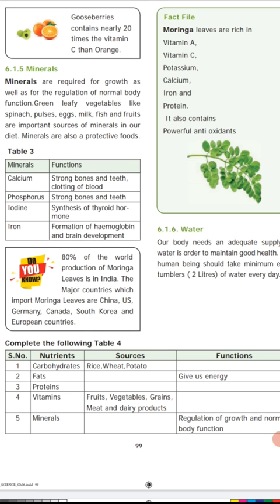Moringa, which means drumstick leaves, contains powerful antioxidants. About 80% of the world's production of moringa is notable. You should take moringa leaves soup daily, as it contains more vitamins and minerals as well as powerful antioxidants.